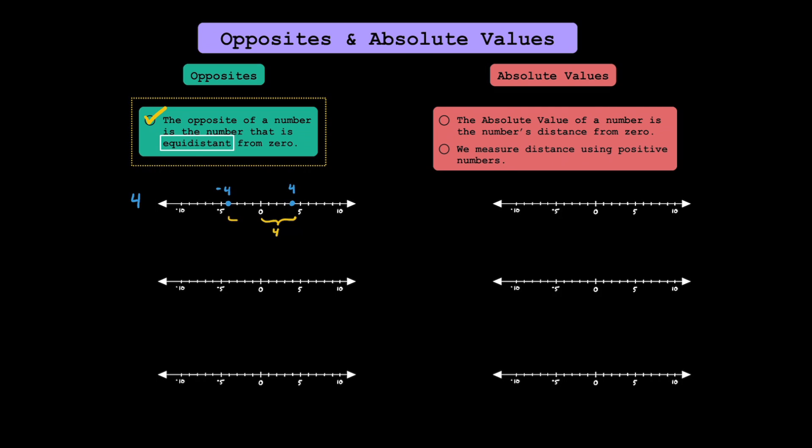While 4 is 4 units to the right of zero, negative 4 is also 4 units away from zero. Simply put, we use negatives to show the opposite. The opposite of 4 is going to be negative 4.